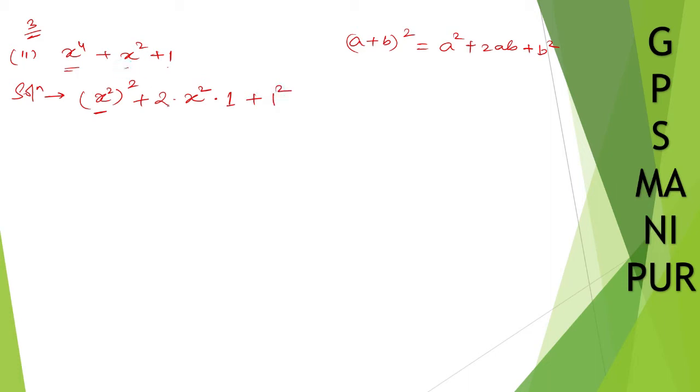But this is only x square, but here we have 2 x square, right? This is only x square. So what we are going to do is minus x square. If we do 2 x square minus x square, we are going to get x square. So we can write down like this.